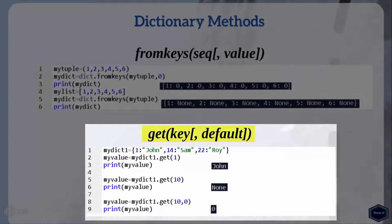The get method takes a key as an argument and returns its value. If there is no such key in the dictionary, get method returns either None or the default value, which is the second argument and is optional. So get method never raises an exception. In this example, I have set the key argument to 1, and get returns the value of key 1 for my dictionary. In the next line, I have set the key argument to 10 — because there is no such key, get returns None. In the next line, I have set the default argument to 0, so get method returns 0.